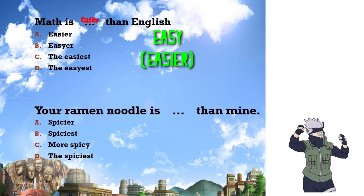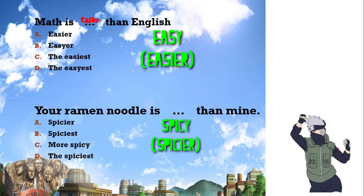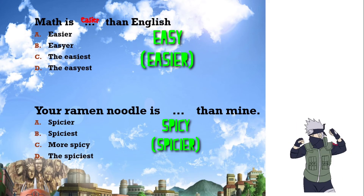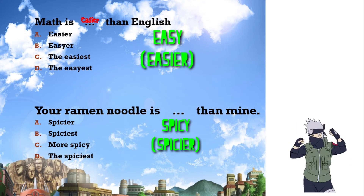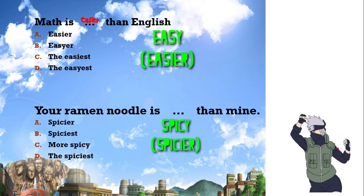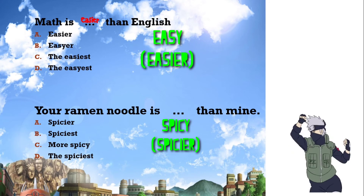Number six: 'Your ramen noodle is ___ than mine.' The basic adjective is 'spicy' — pedes — which ends with Y. We are comparing two things — your ramen and mine — so it is comparative. The answer is 'spicier.'